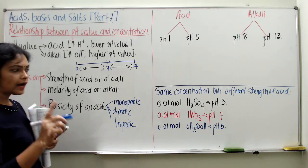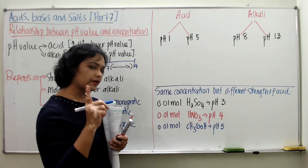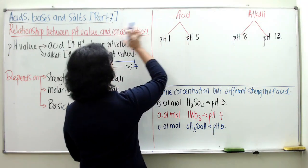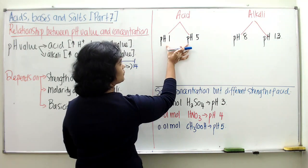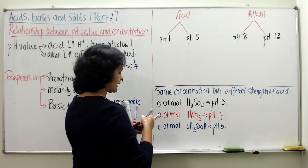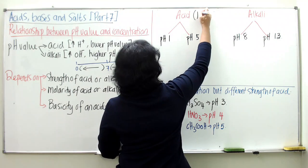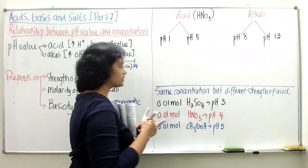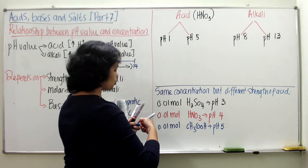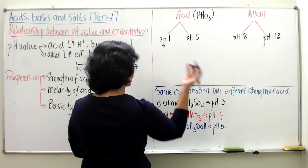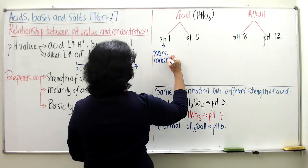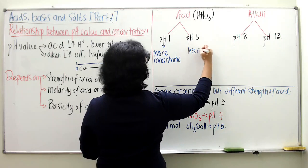Now teacher is going to discuss an example for further understanding of what has been introduced. Let's look at pH value — how does concentration affect pH value for an acid. You can look at your module, but I am giving you a different type of example. Let's look at nitric acid. This is the formula for nitric acid. The pH value for nitric acid first is pH 1 — this is stronger, meaning more concentrated.